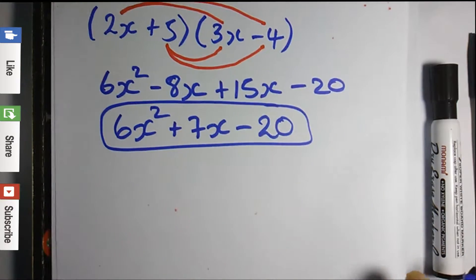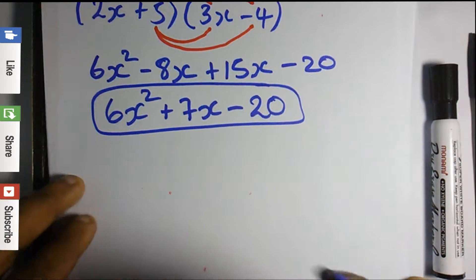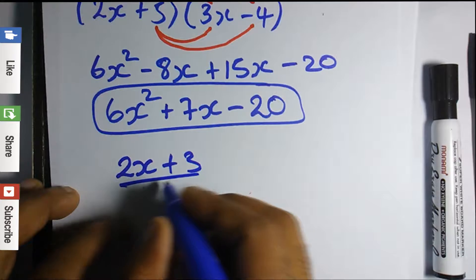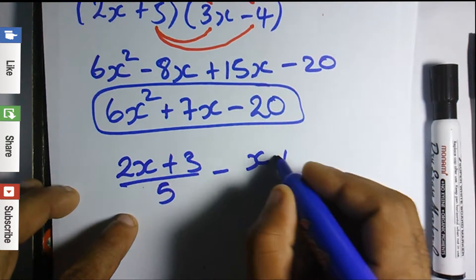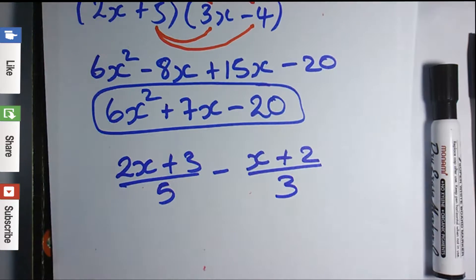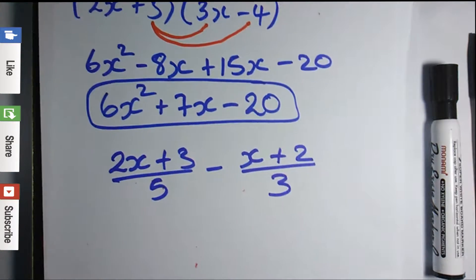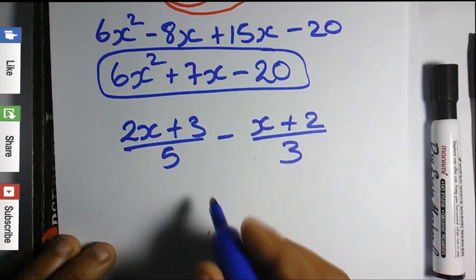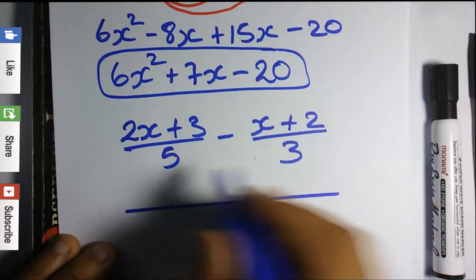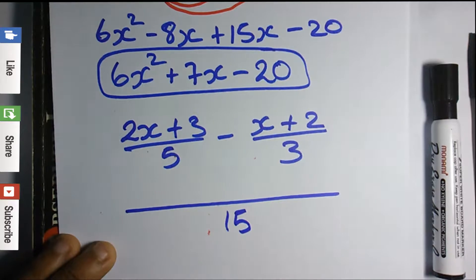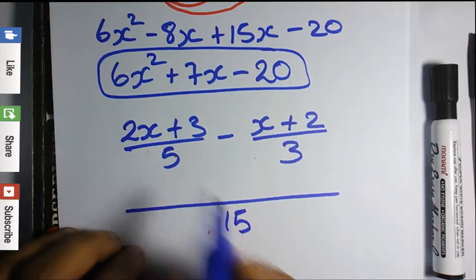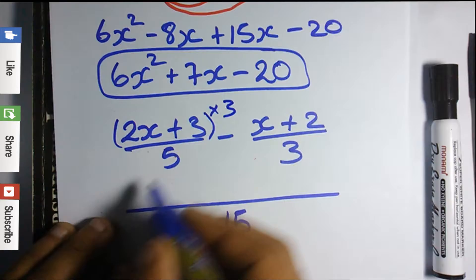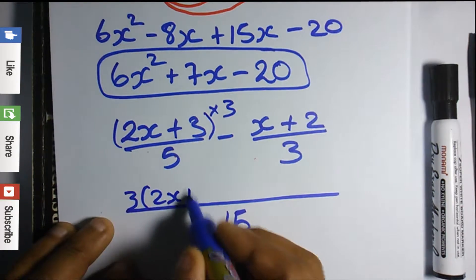We're going to continue with an algebraic fractions question. Let's say we have (2x + 3)/5 minus (x + 2)/3. Just like how we would solve simple algebraic fractions, the first thing we do is find the LCM. The LCM of 3 and 5 is 15. Then 5 into 15 goes 3, so we multiply the numerator by 3: that's 3 times (2x + 3).